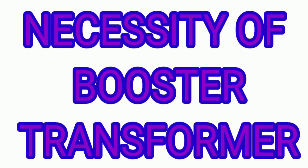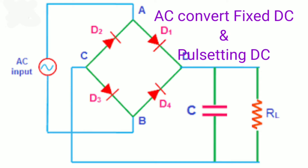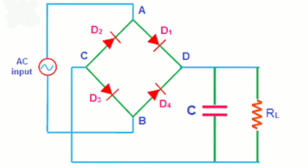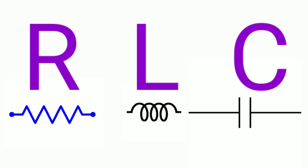In this video, we will talk about the necessity of the Booster Transformers. There is a bridge rectifier circuit. We use a fixed DC, a pure DC, and a pulsating DC. We use a capacitor filter — an RC filter — to smooth the output. The same concept applies to Booster Transformers.